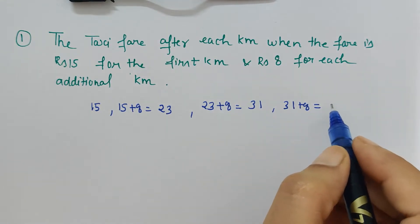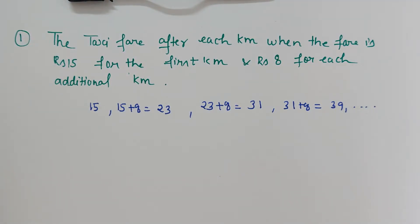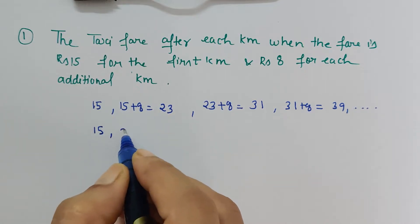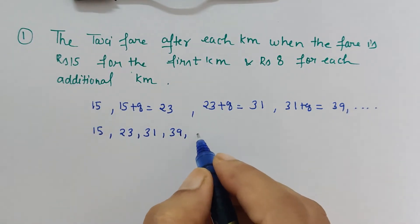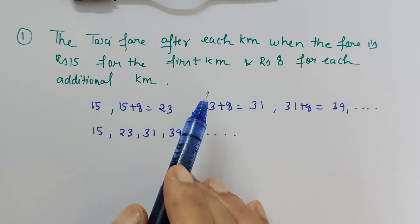be plus 8 which is 39, and so on. So when I rewrite the result it is 15, then 23, 31, 39. So we have to check whether the given situation forms an AP or not. This is the question.